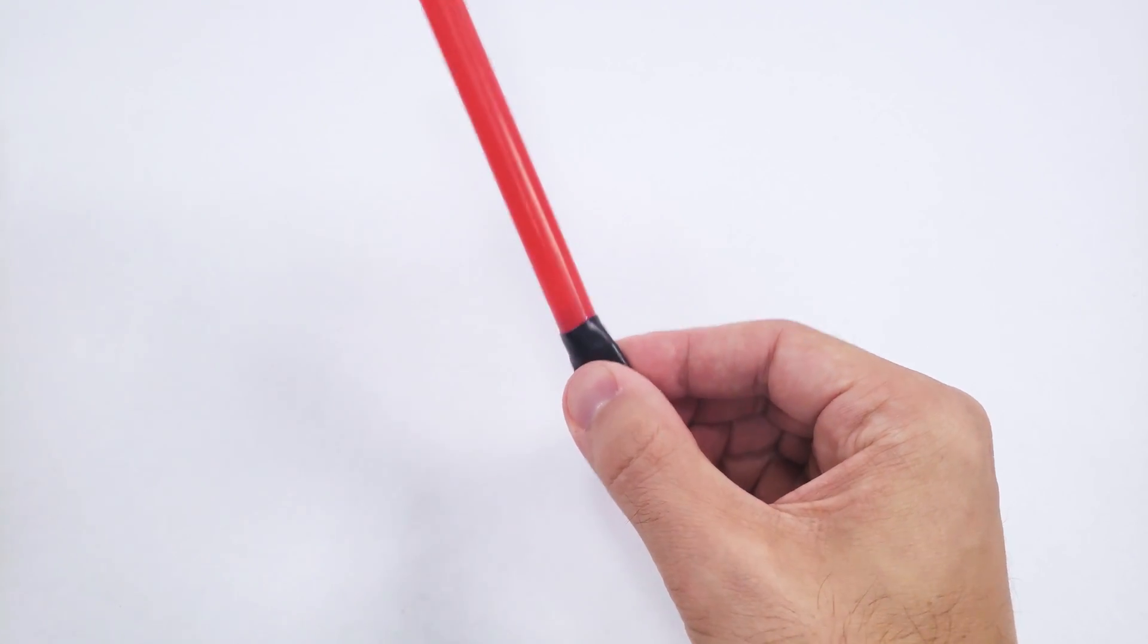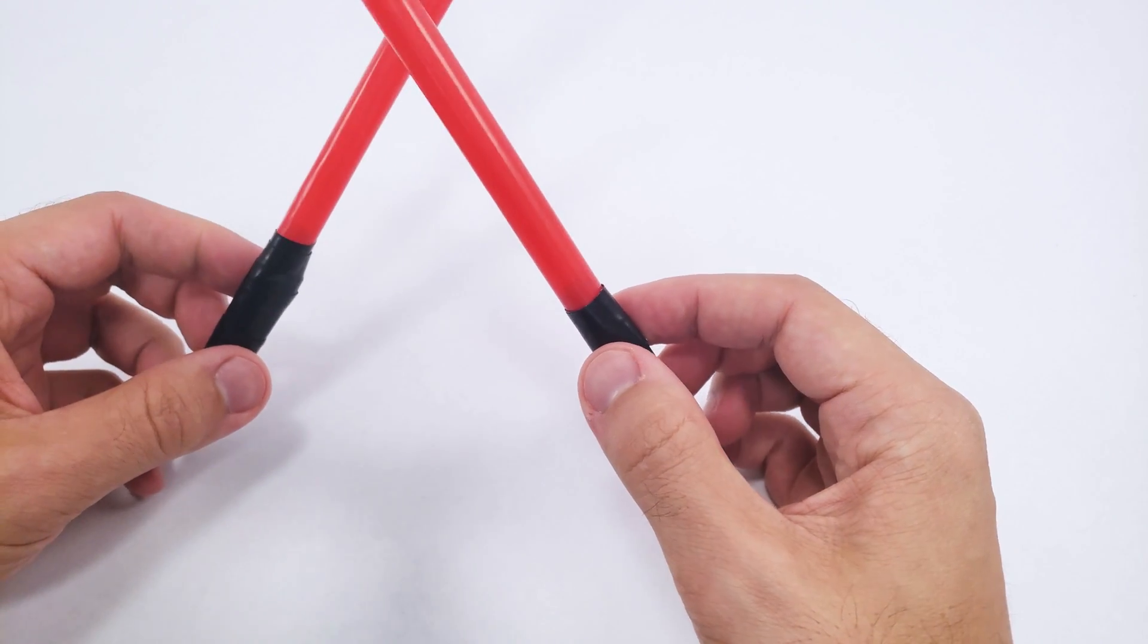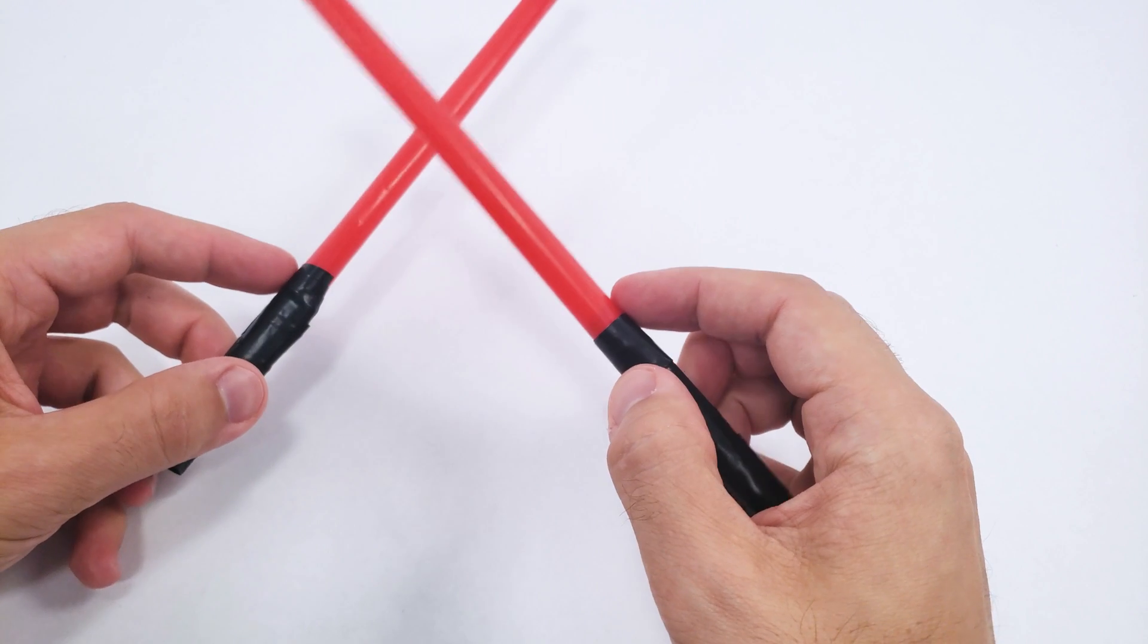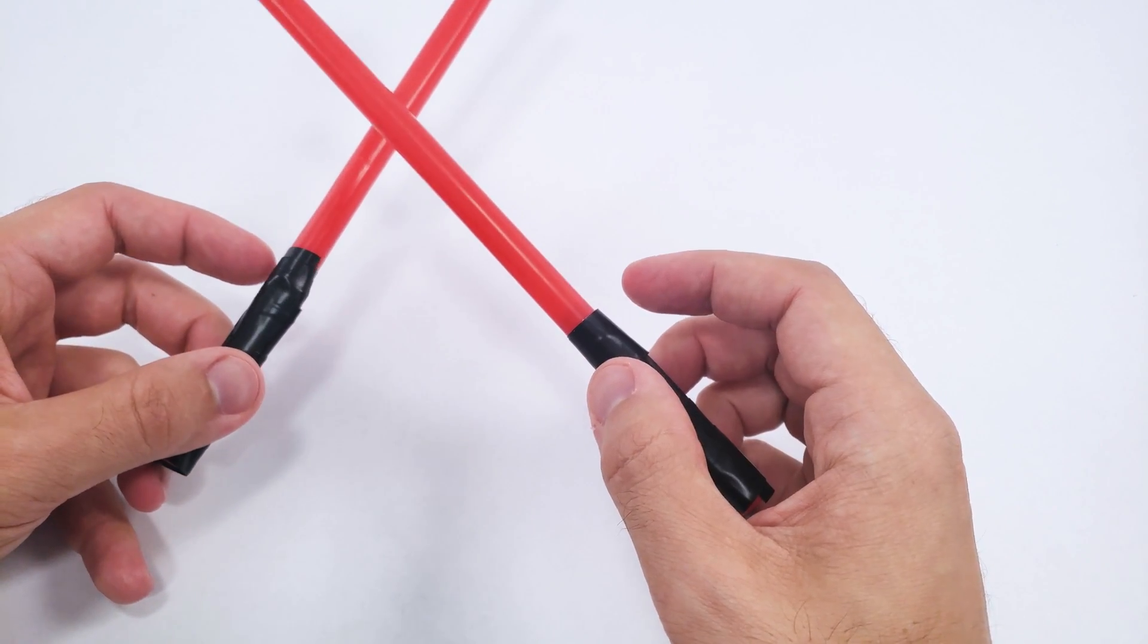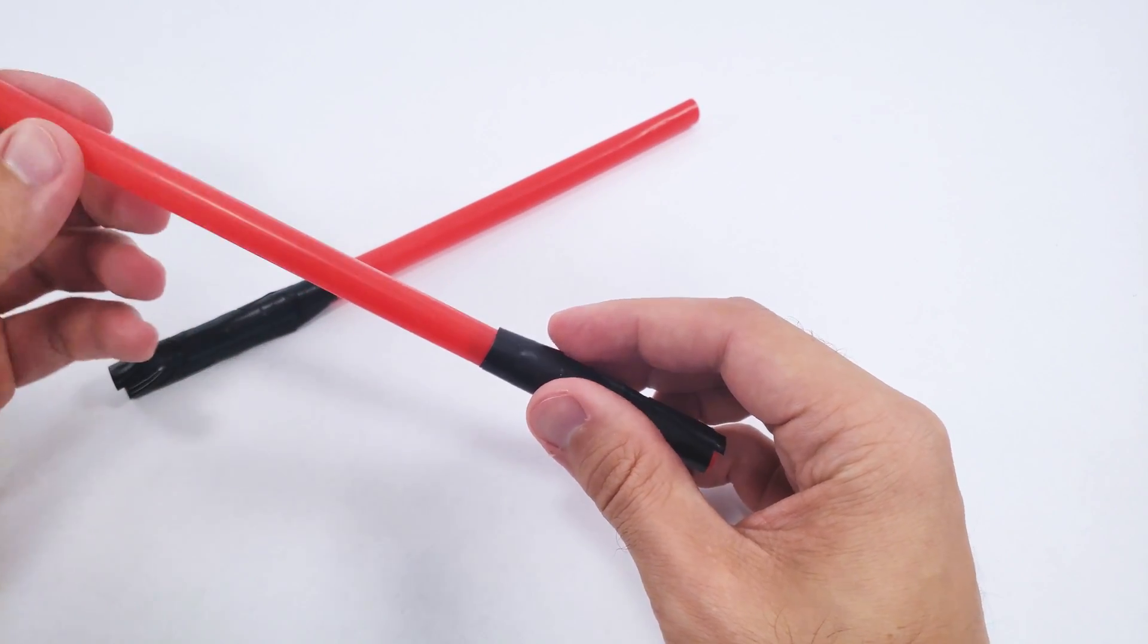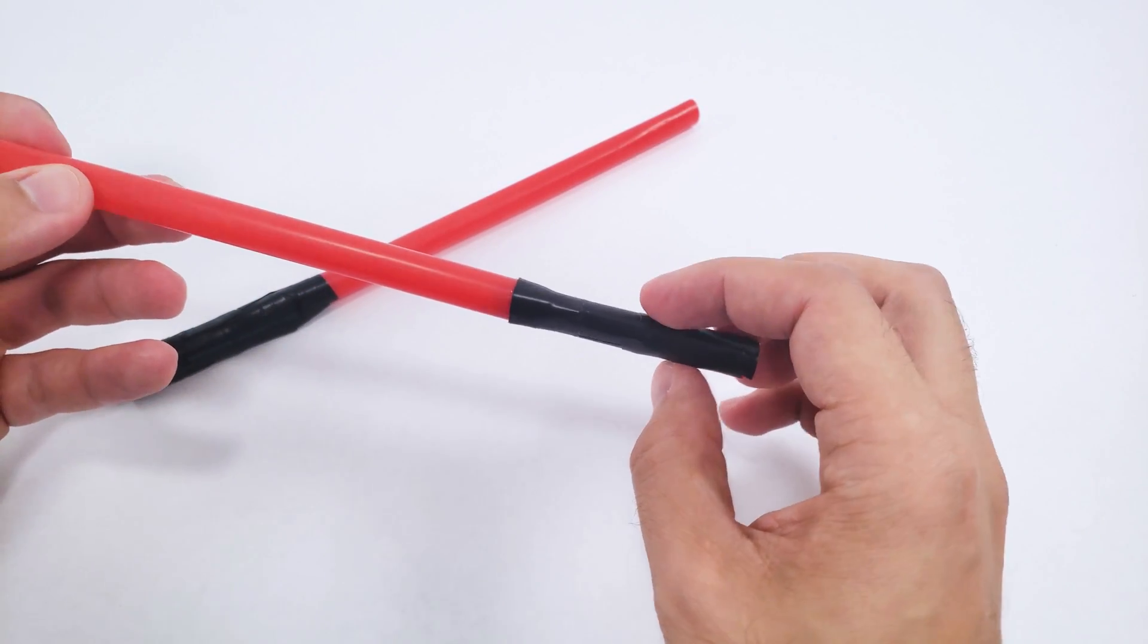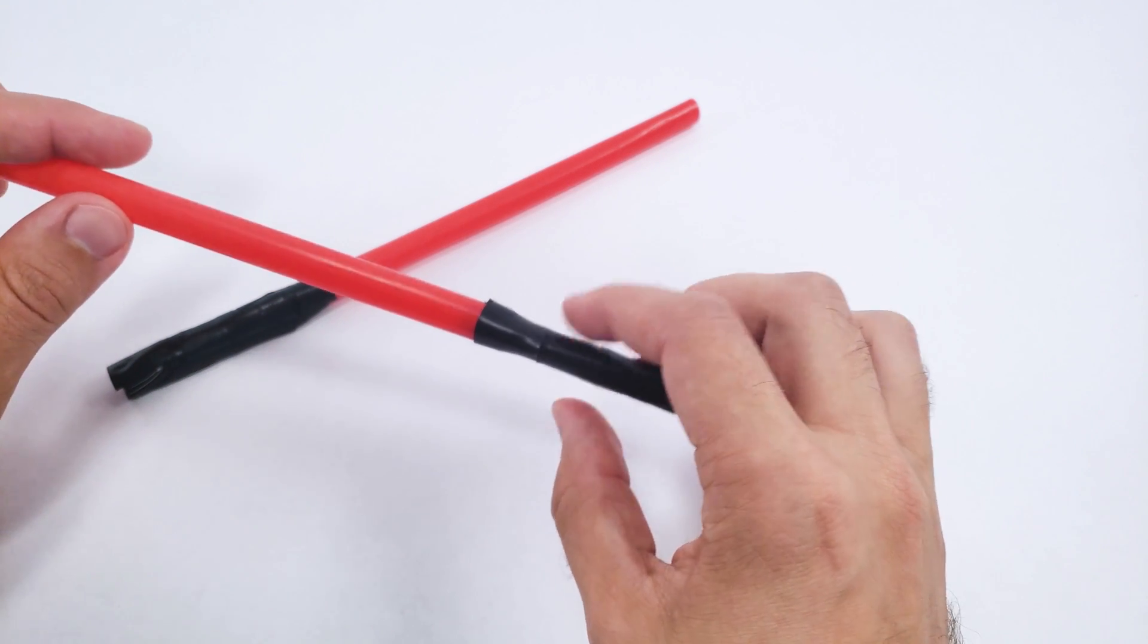So there you go. You now have your own working LED lightsabers for a lightsaber duel. There are plenty of other things you could do here, like using different color LEDs and straws to make your favorite color saber, or even using two LEDs on a single battery to make a Darth Maul style double-bladed saber.